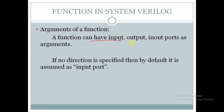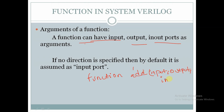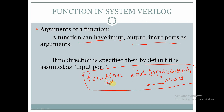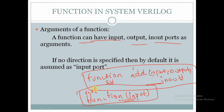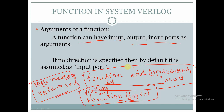Functions in SystemVerilog — arguments of a function can have input, output, or inout as arguments. For example, if we declare a function 'add', then this function can have input arguments, output arguments, as well as inout arguments in SystemVerilog. Whereas in Verilog, a function can have only input type arguments.